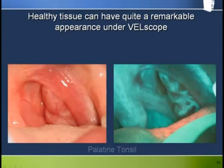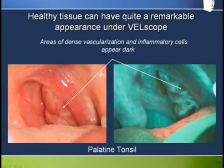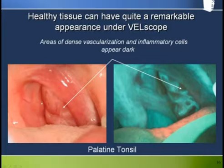Some structures in the mouth have quite a remarkable appearance under Velscope. A good example is the palatine tonsil — the areas of dense vascularization and inflammatory cells appear quite dark. Again evident in these pictures is the darkened anterior tonsillar pillar.